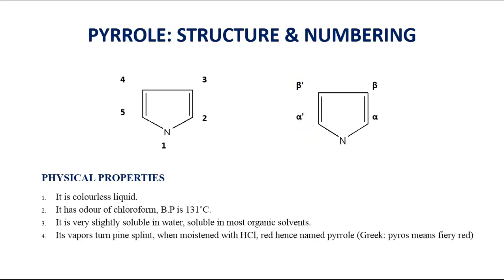Now let us discuss the physical properties of Pyrrole. Pyrrole is a colorless liquid. It has an odor of chloroform. The boiling point of Pyrrole is 131 degrees Celsius. It is very slightly soluble in water and soluble in most organic solvents. The vapors of Pyrrole turn a pine splint moistened with HCl red in color — hence it is named Pyrrole.